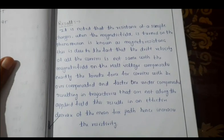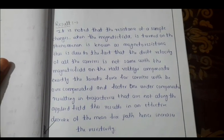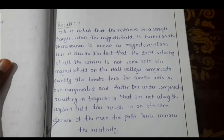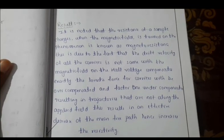The next graph is for resistance ratio delta R by R versus magnetic field. It is a curve which is gradually increasing. You can write the result here: it is noted that the resistance of a sample changes when the magnetic field is turned on. The phenomenon is known as magneto resistance.